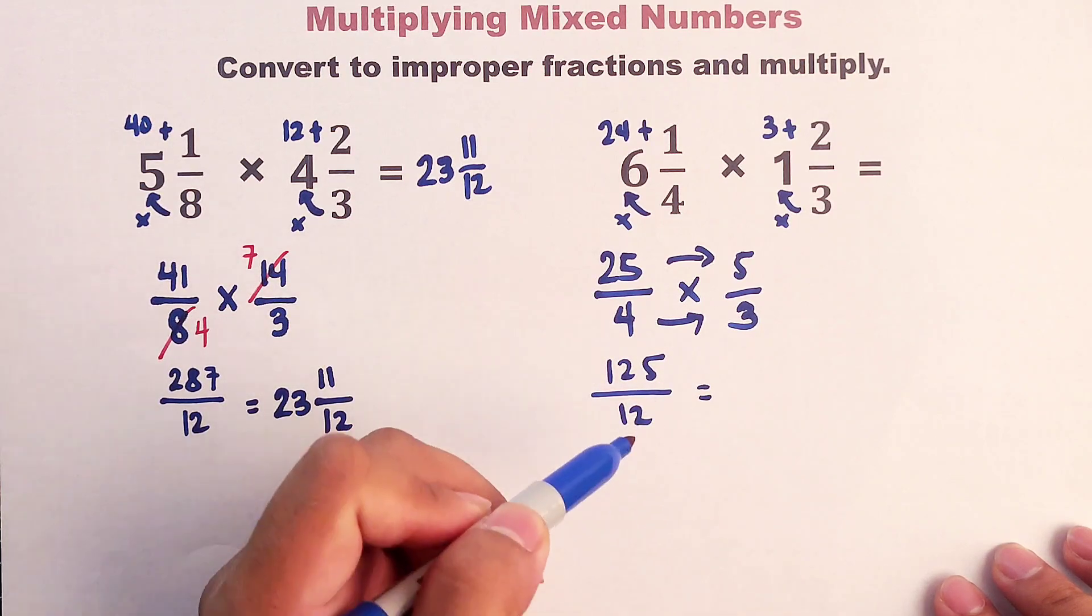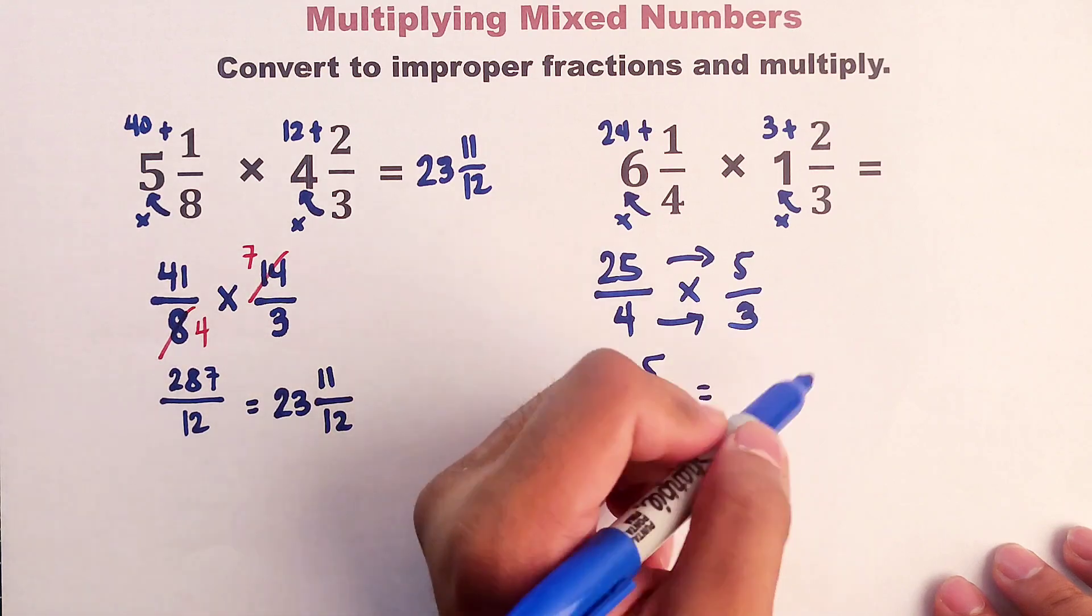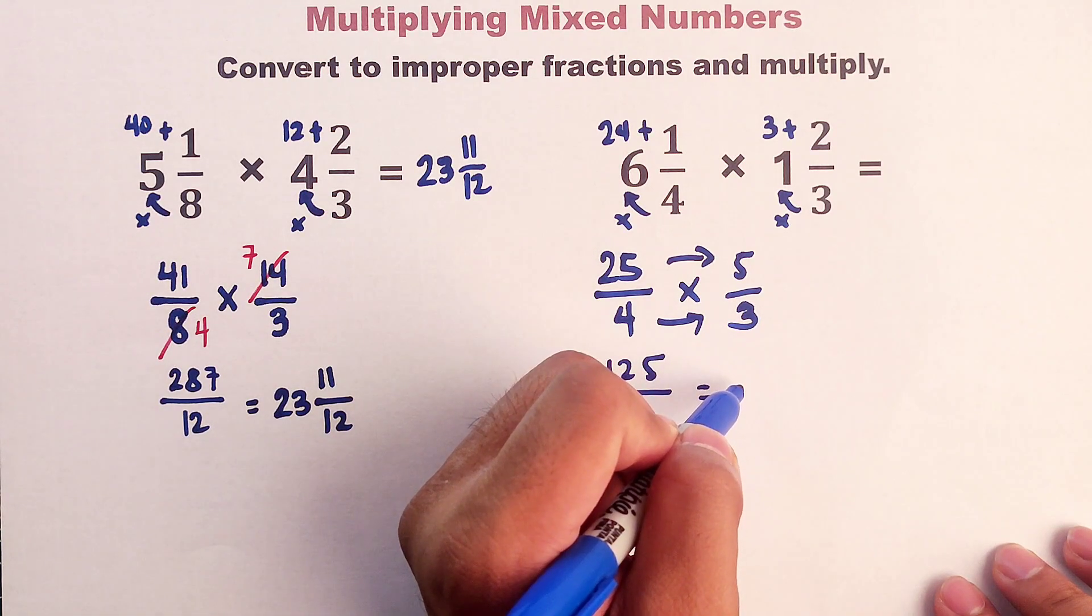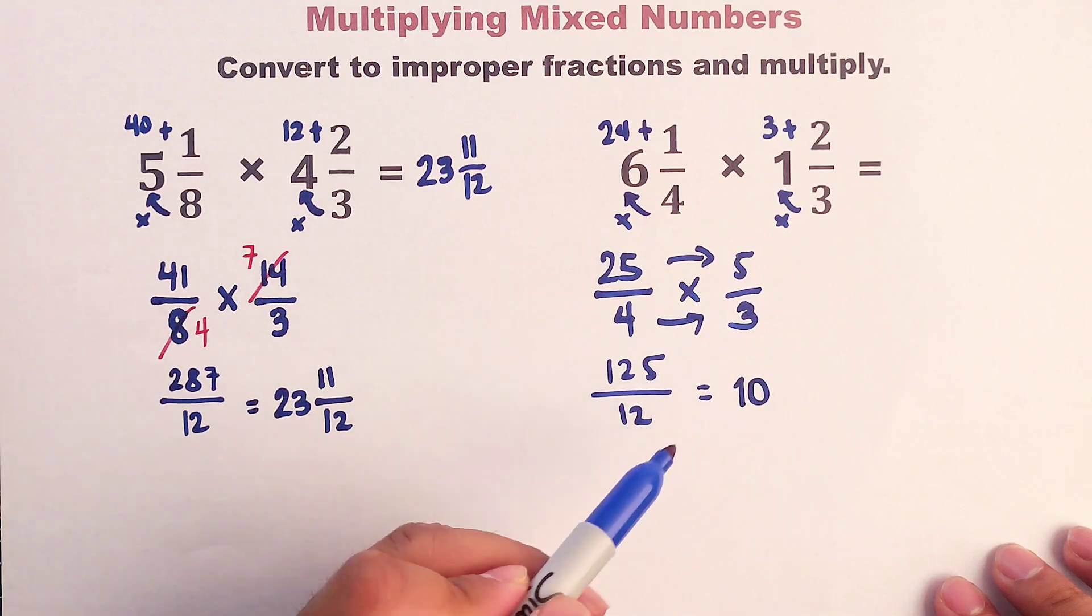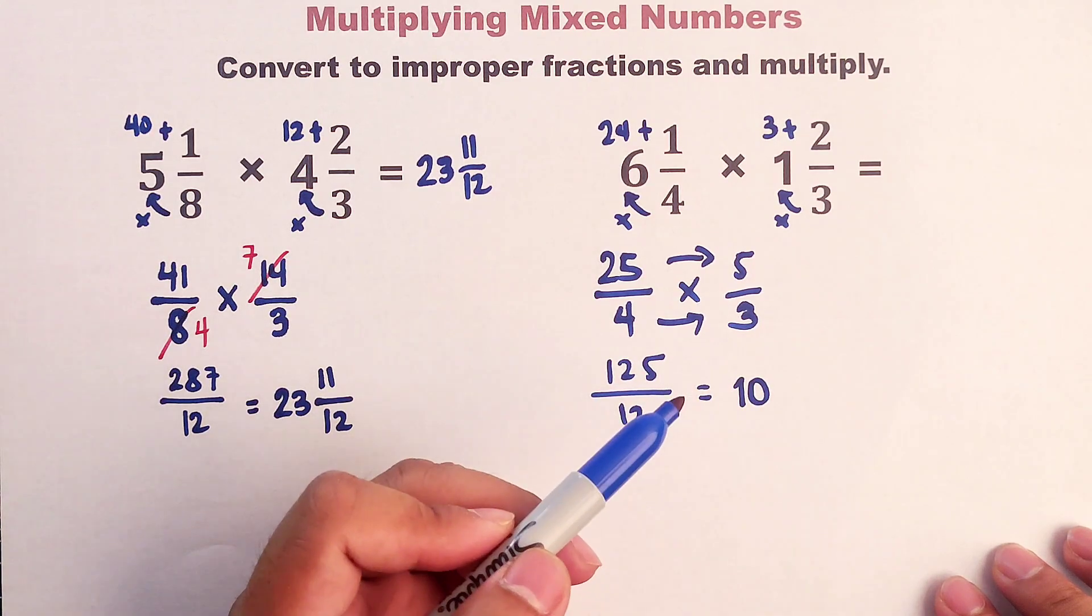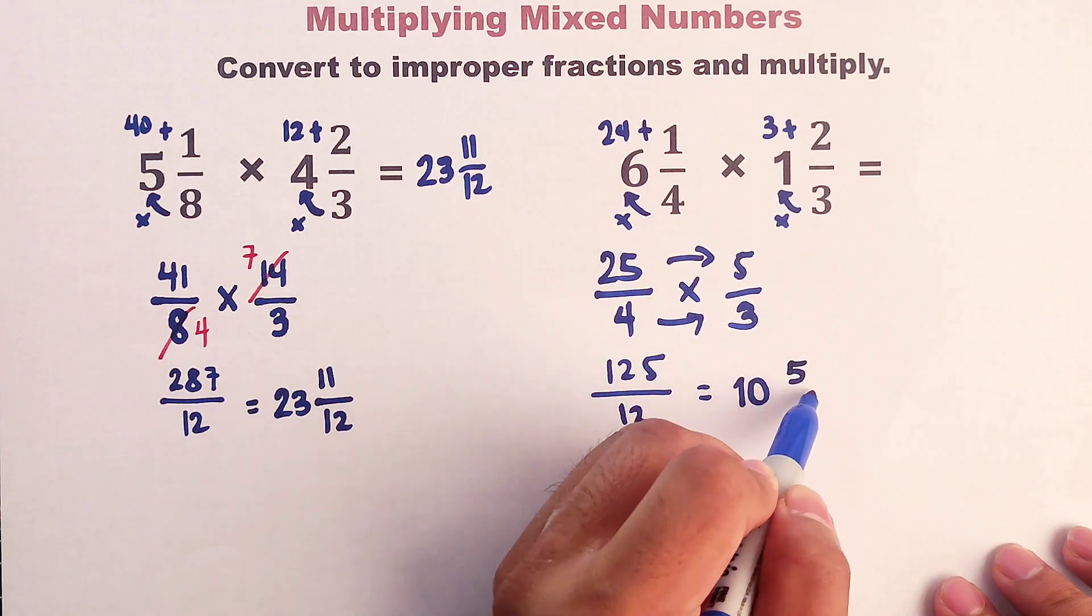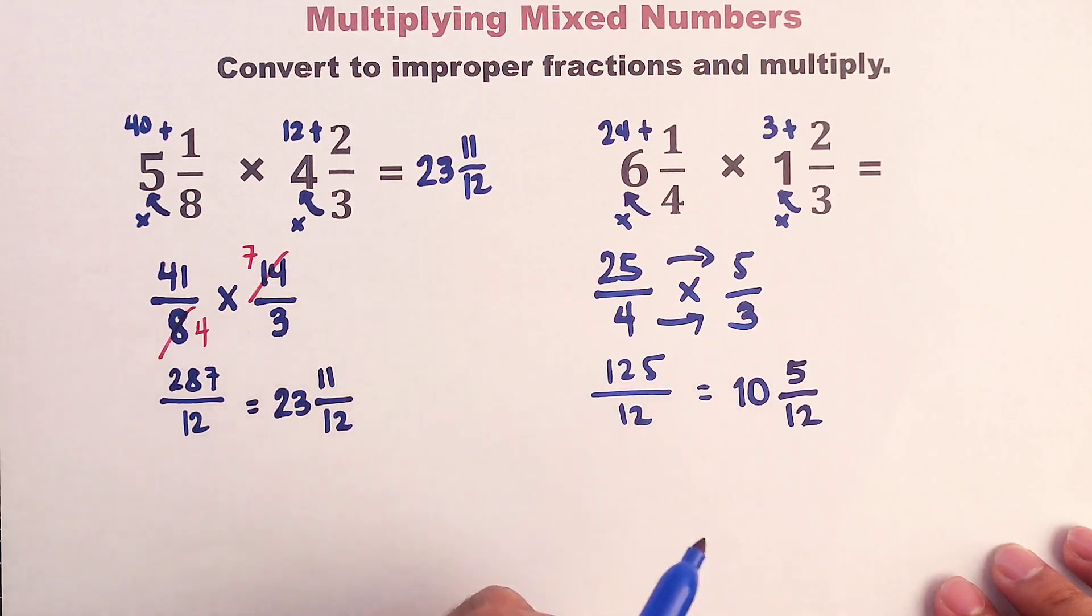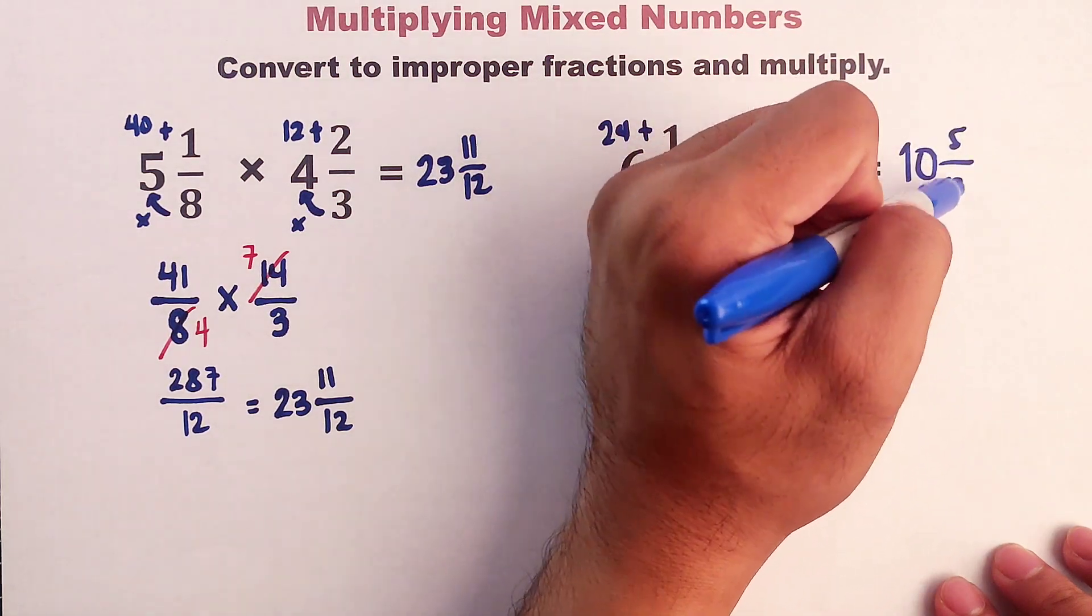There are 10 12s in 125. So this will become 10. The whole number must be 10. And then, 12 times 10 is 120. So think about it. There's remaining 5. So our numerator is 5. And then we will copy 12. And the answer is simply 10 and 5 over 12.